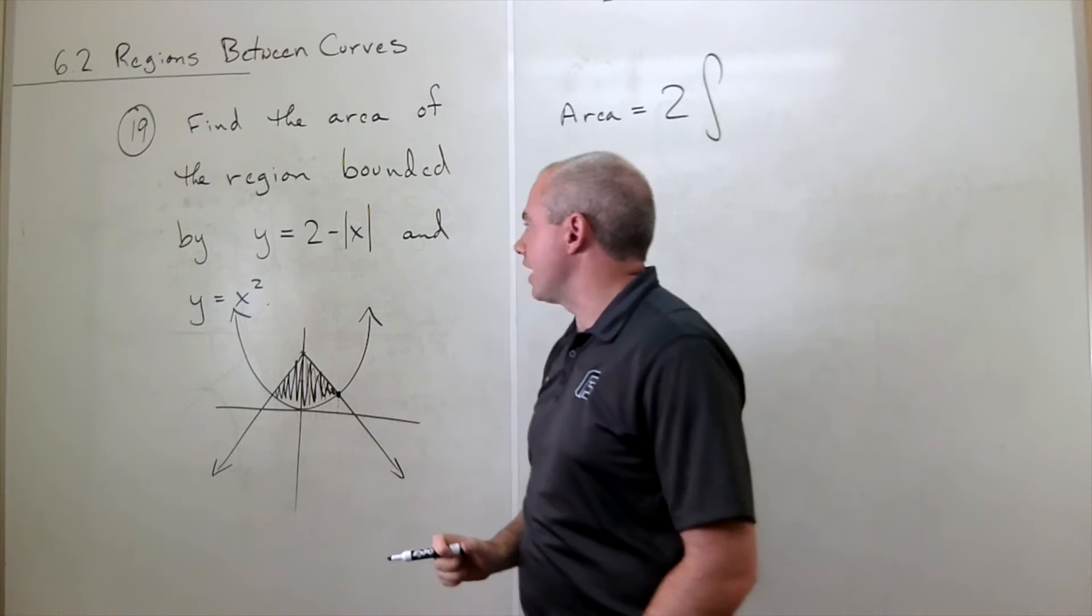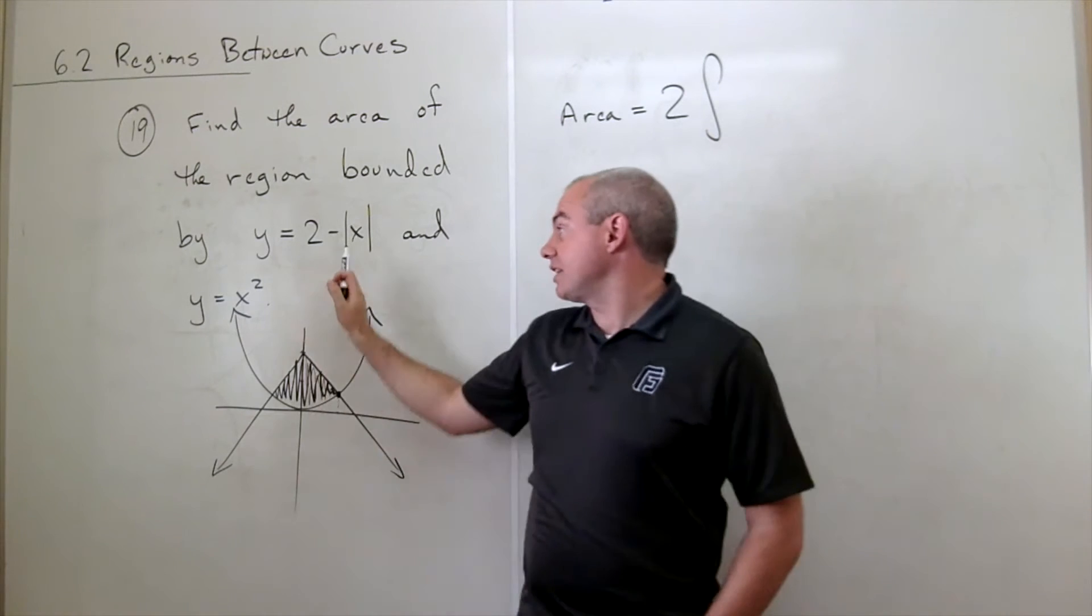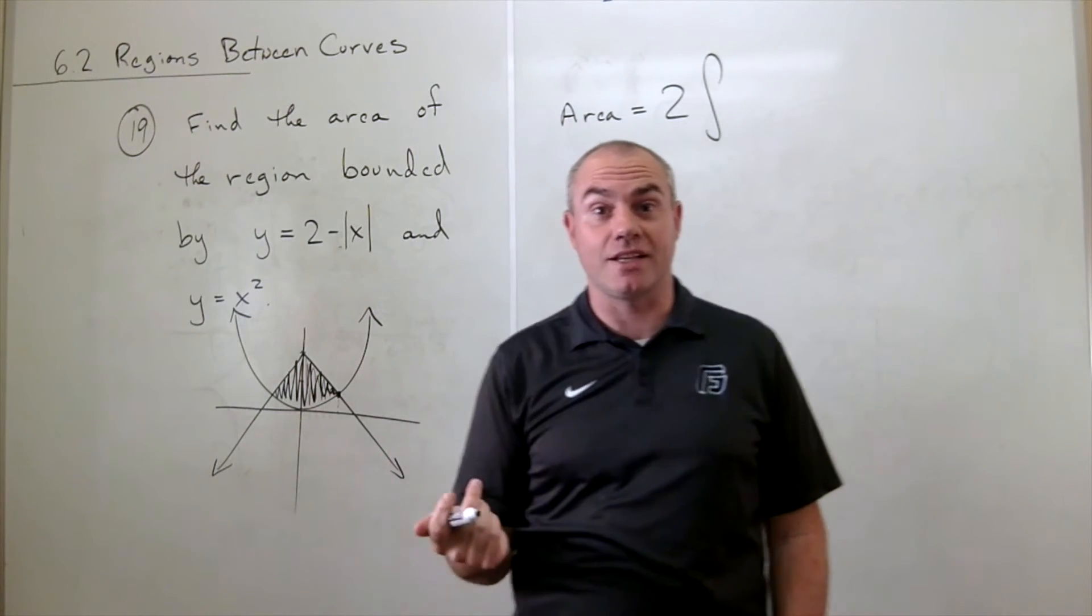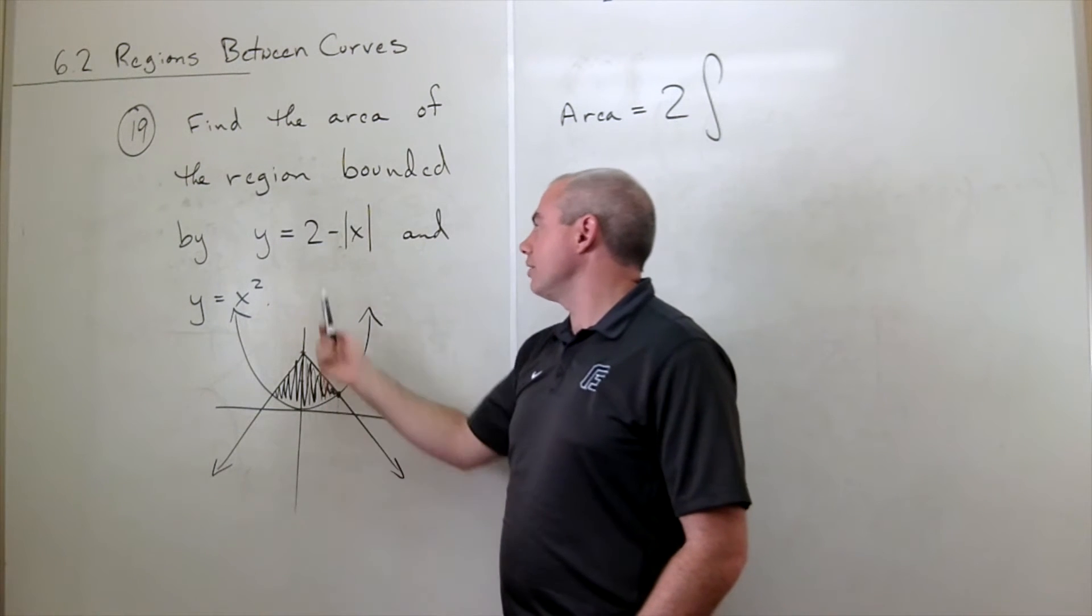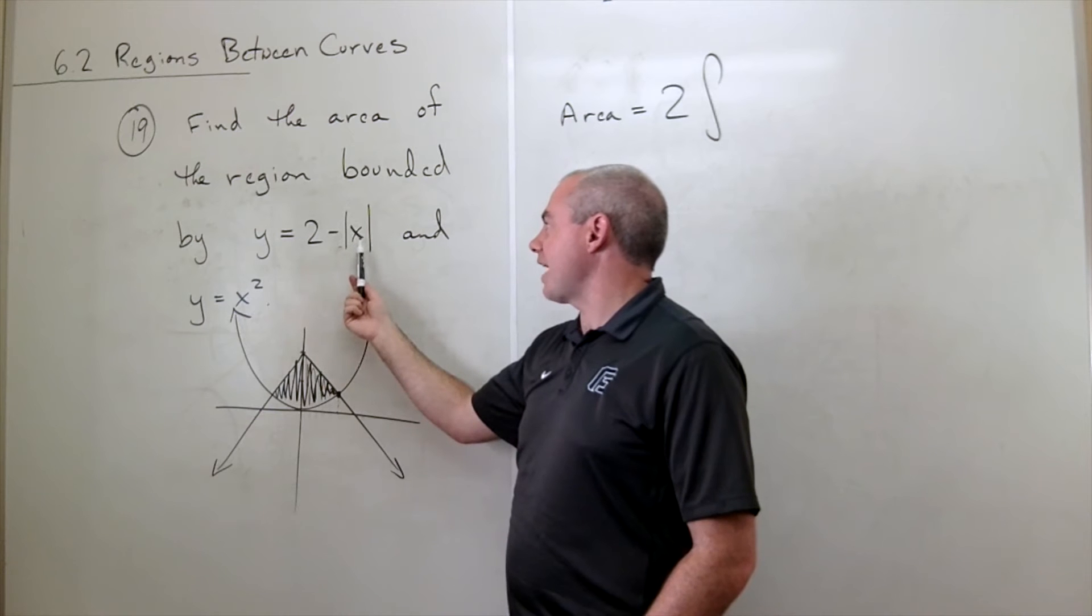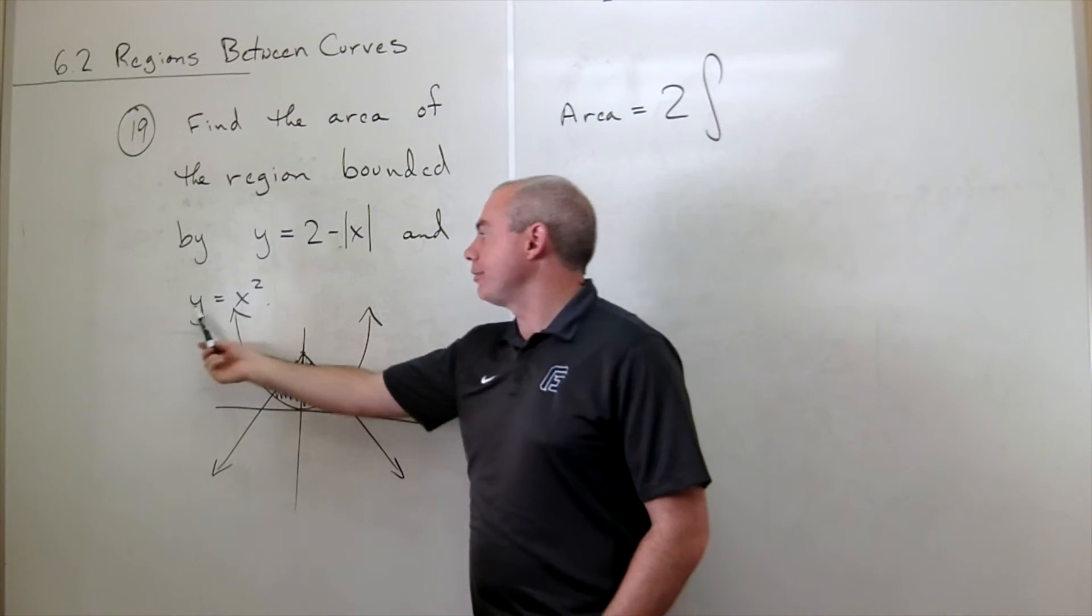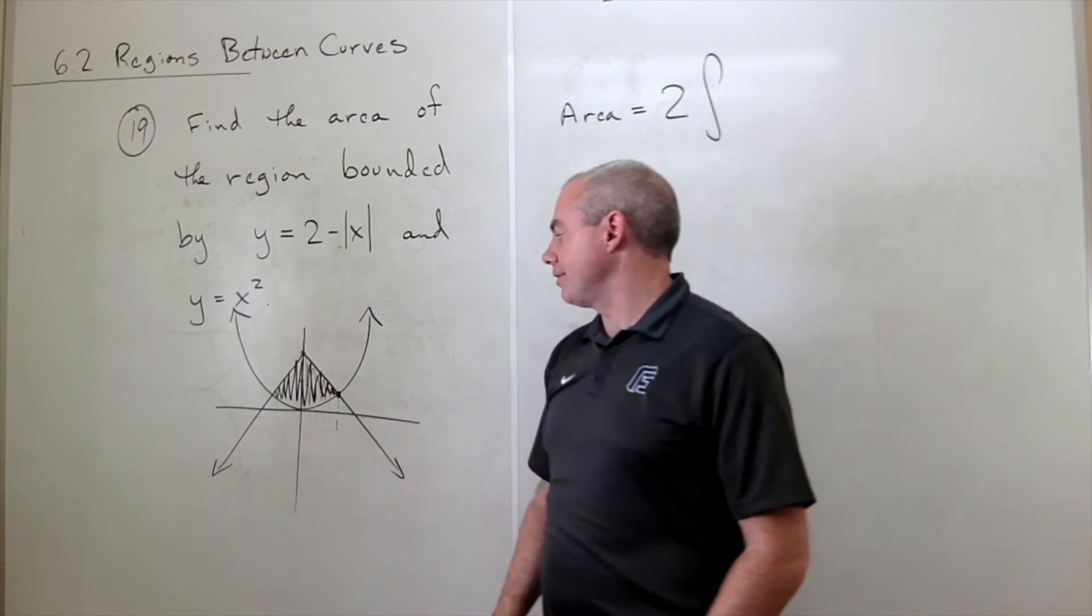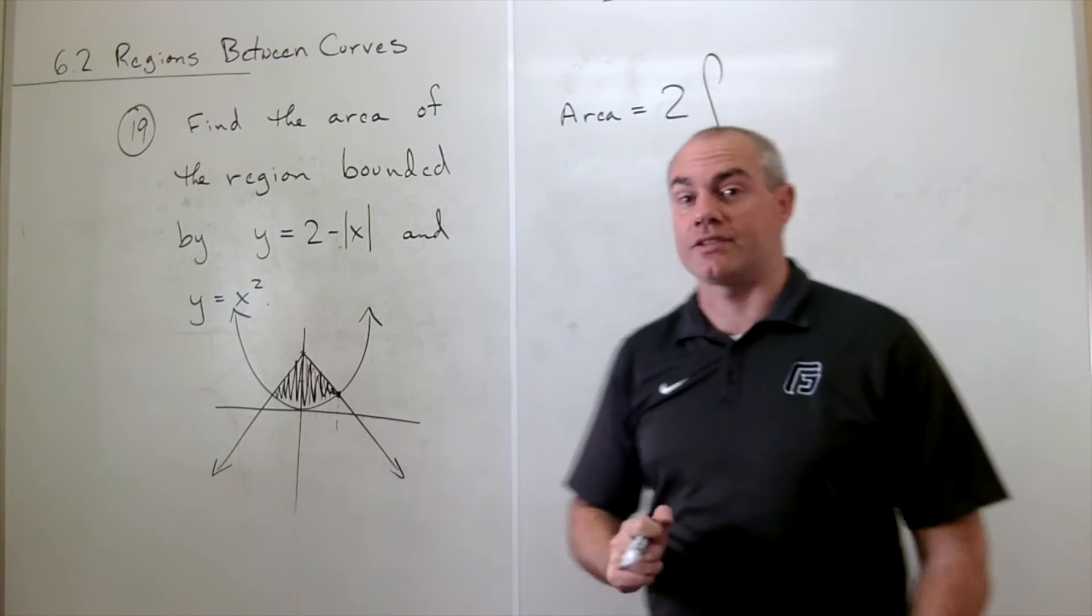So where did those two guys cross? Again, I could set these two equal to each other and solve for x or I could just kind of investigate a little bit on my own and see if I can figure it out. So I think really simply I can see if x is 1, then y would be 1 and y would be 1. So this is when x is 1. So I want to integrate from x equals 0 to x equals 1.